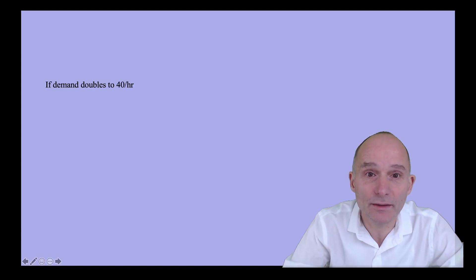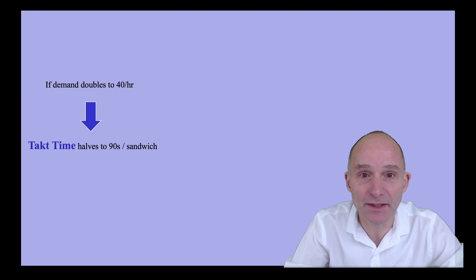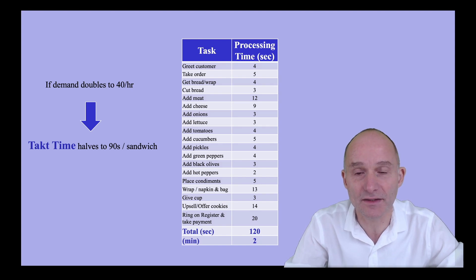But what happens when demand doubles? Now the takt time halves from 3 minutes to 90 seconds. Recall, faster running means shorter minutes per mile. Notice that the total processing time per sandwich is 2 minutes, so the shop can't keep up with one operator.